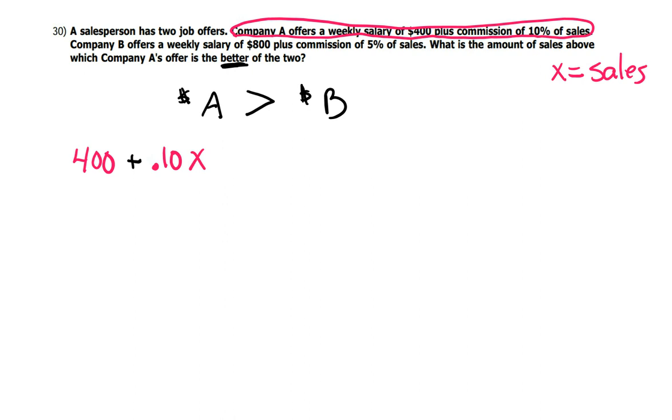So if you made $1,000 worth of sales, and you multiply that times .10, that would be an extra $100. So then you'd make $500. That's Company A.